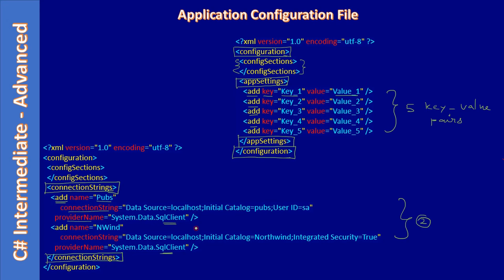For experienced users, you can directly create the connection setting inside the application configuration file. Otherwise, we can use the project properties, and from there we can create the connection string — the connection string entry will automatically get populated into the configuration file.